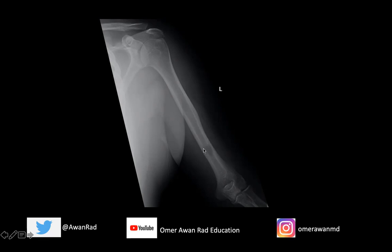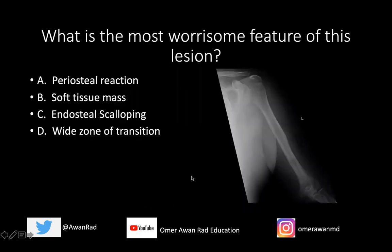So let's take a look at this case. This is a frontal view of the left humerus, and what we're noticing is obviously a lucent lesion along the distal humeral metadiaphysis. The question I have for you is: what's the most worrisome feature of this lesion? Is it periosteal reaction, soft tissue mass, endosteal scalloping, or wide zone of transition?